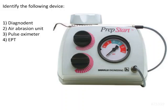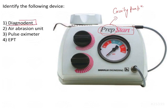Identify the following device. If you see this, it's going to be your prep start, so it has to do something with cavity preparation. Looking at the options: one is the Diagodent, which is a device used for diagnosis of cavities — actually a caries detection device.